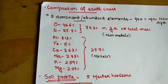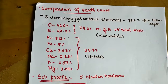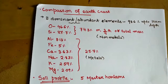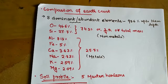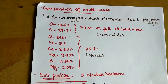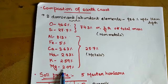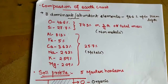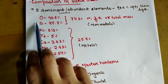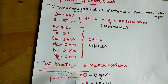Hello friends, welcome to my channel. Today we are going to discuss the composition of the earth crust and soil profile. So the first topic is composition of earth crust. There are eight dominant or abundant elements present in the earth crust. If we analyze the earth crust, at least 98.6% is contributed by these eight elements.